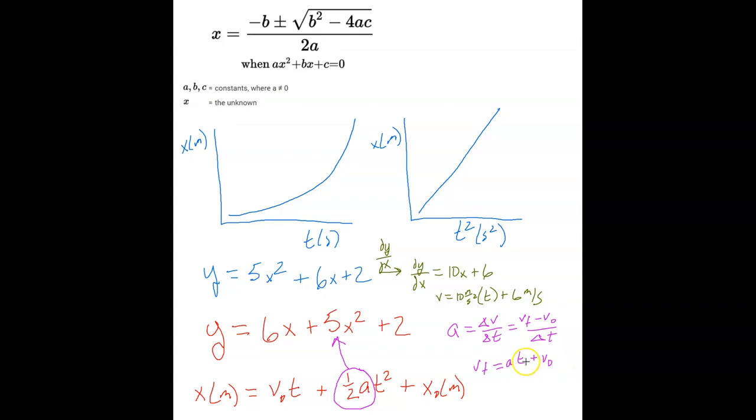And so from there, I see that when I do the derivative, I take the 2. So this is going to be 2 minus 1. And I multiply the 5 times 2, and I get 10.